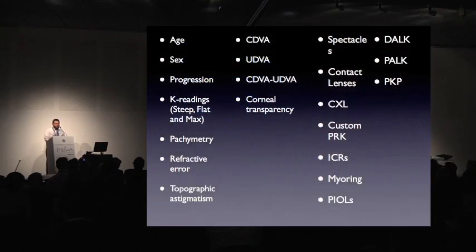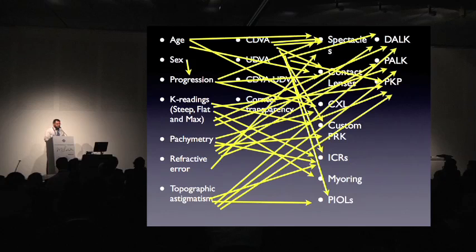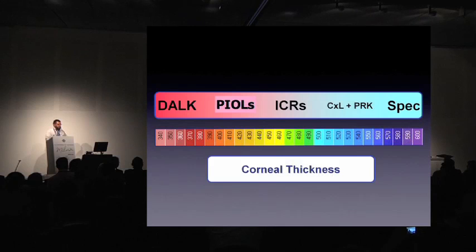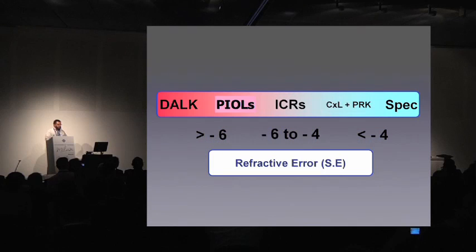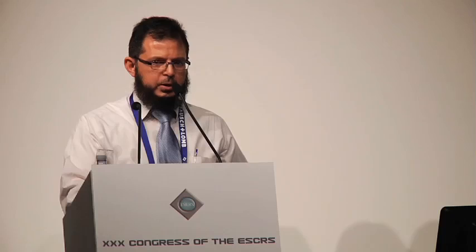As you see, there are a lot of interrelations between those modalities — there is a big mess. But in general, we can say: the higher the K-max, the more invasive the intervention will be. The thinner the cornea, the more invasive the intervention would be. And the lower the corrected and uncorrected visual acuity, the more invasive the intervention would be.